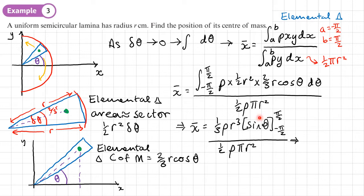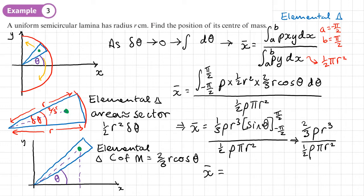The top becomes (1/3) rho r³ times 2 = (2/3) rho r³, divided by half rho pi r². Simplifying: (2/3) divided by (1/2) is (4/3), rho cancels, and r³/r² leaves r. So x-bar = 4r/(3π) — the same result as before, confirming both methods give the correct answer using the elemental triangle method.